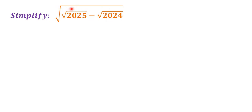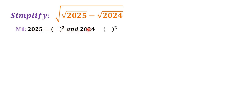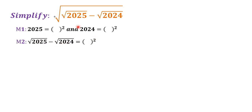The target is to get rid of the nested radicals. There are two ways to do this. Method one is to rewrite 2025 as something squared and to rewrite 2024 as something squared — in this way we can remove the inner radicals. Method two is to convert square root of 2025 minus square root of 2024 as something squared, so we can remove the outside radical.